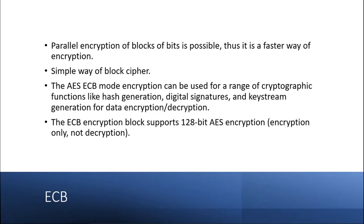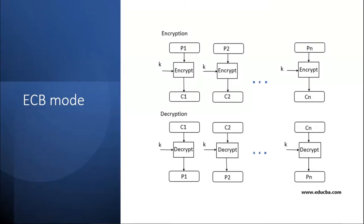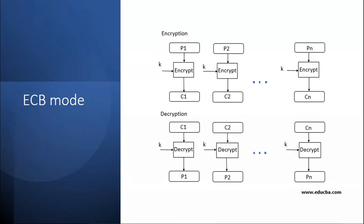In ECB, parallel encryption of blocks is possible, making it a faster method. Parallelism is possible because the encryption of one block does not depend on the encryption of any other block. At the beginning, you are available with all the plaintext blocks and the required key K, so you can start encrypting them in parallel.